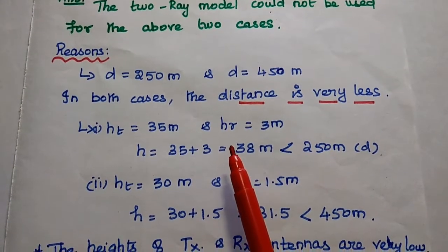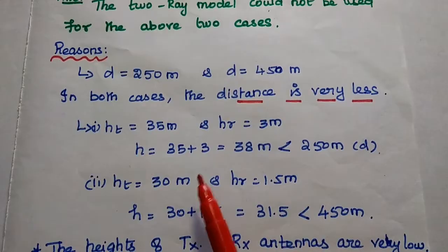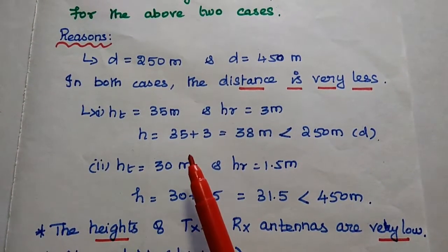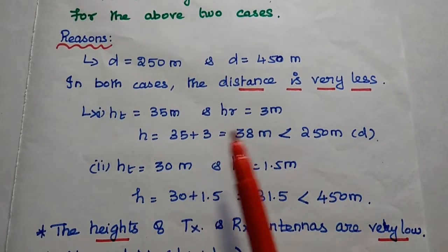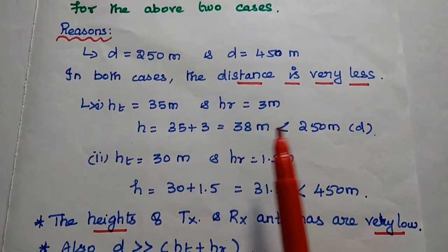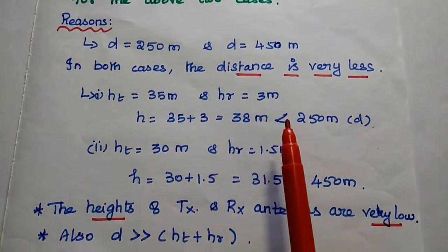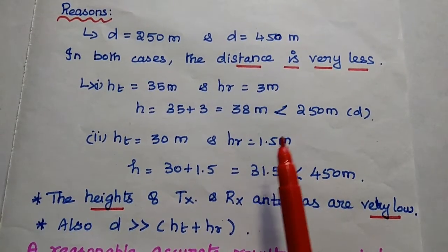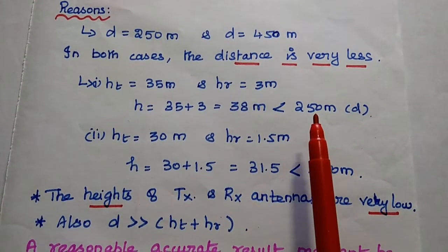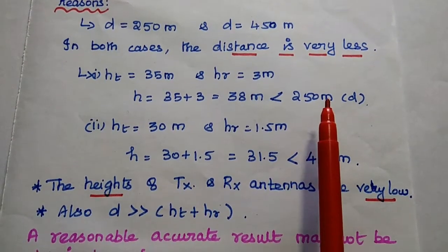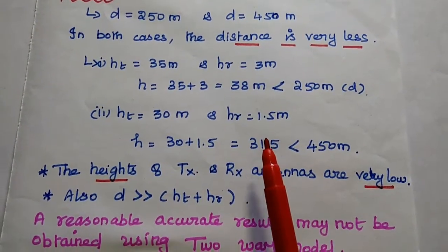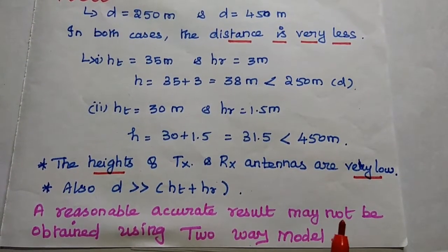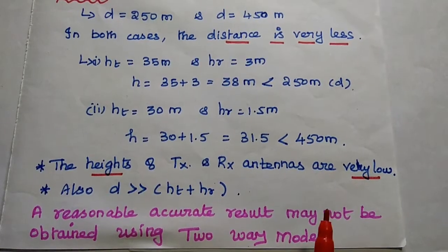The next reason is that the total height of the transmitter and receiver is less than the distance. The total height is equal to 35 plus 3 in the first case, that is 38 meters, which is less than 250 meters — far less than the distance. In such cases, we cannot get an accurate result using this two-ray model. Therefore, we can declare that a reasonable, accurate result may not be obtained using this two-ray model.